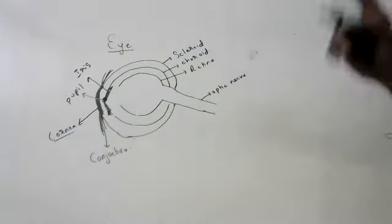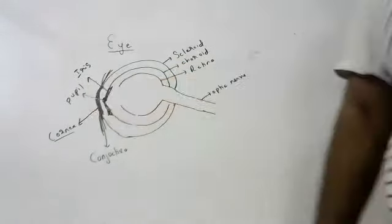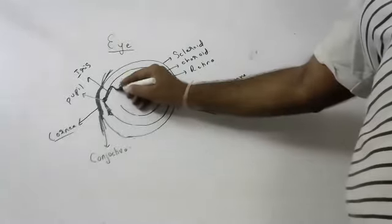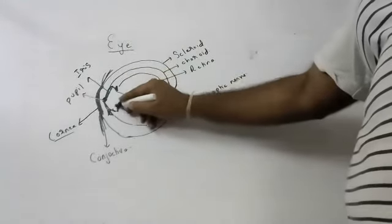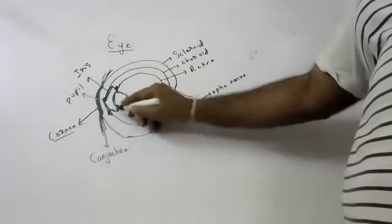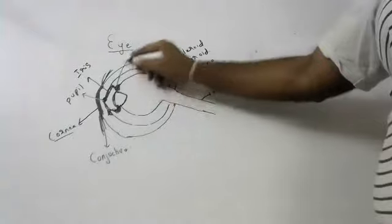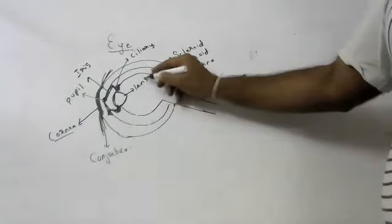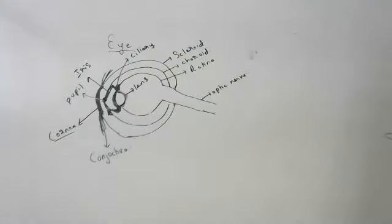Next, the ciliary muscles will be holding the lens. These are called ciliary muscles. What do they hold? They hold the lens of our eye. The lens of our eye is a biconvex lens.